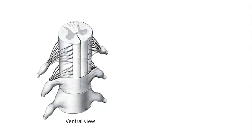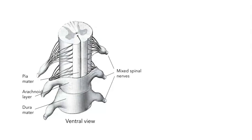Let's return to humans for a closer look at the tissue. In this ventral view — meaning we're looking from the front — the spinal cord, like the brain, is surrounded by three layers of meninges: the dura mater, the arachnoid layer, and the pia mater close against the tissue. The space between the pia mater and the arachnoid layer is filled with cerebrospinal fluid. These are the trunks of the mixed spinal nerves, carrying both sensory information in and motor information out.